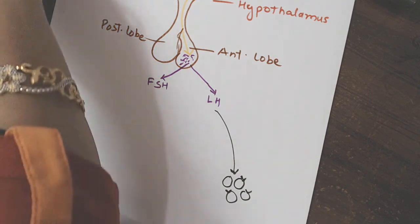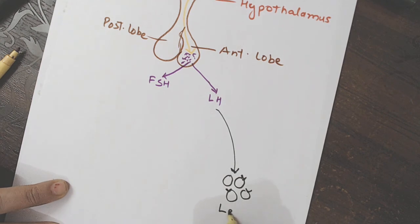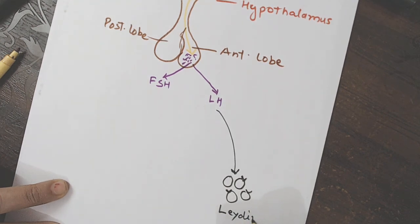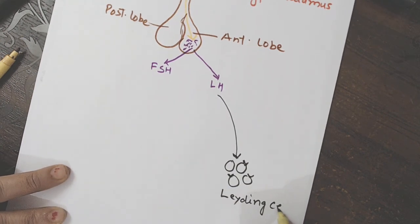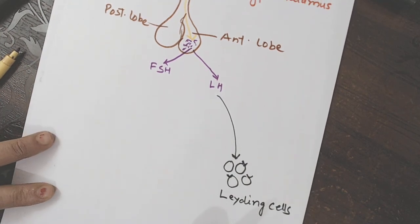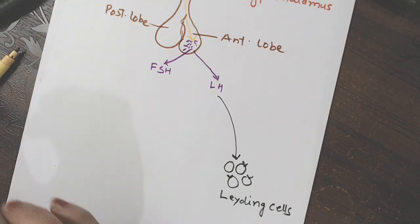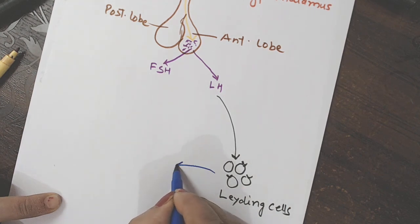These are Leydig cells. Aur in par receptors honge. Ye receptors will receive the LH. So, LH stimulates the Leydig cells. And these Leydig cells,